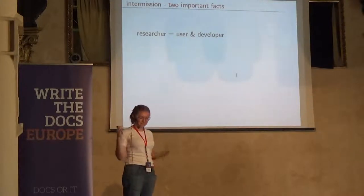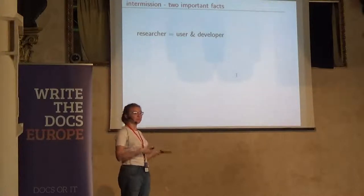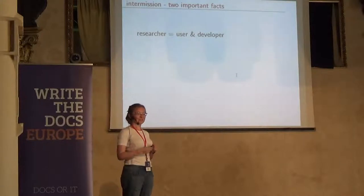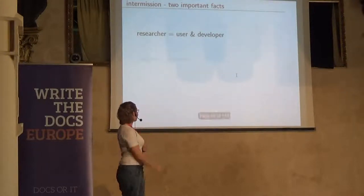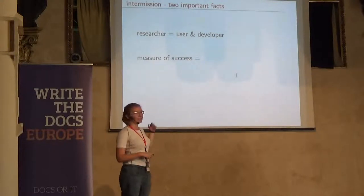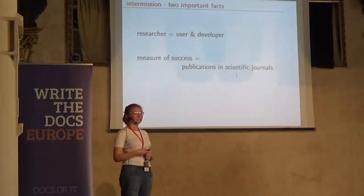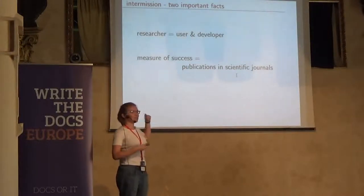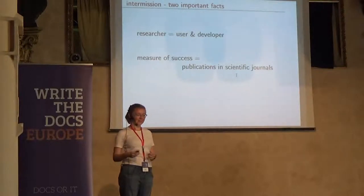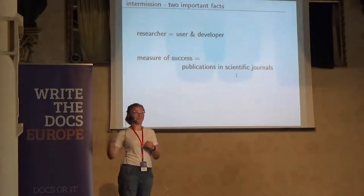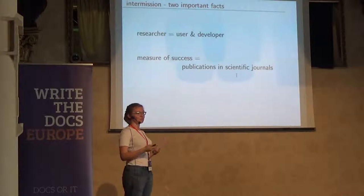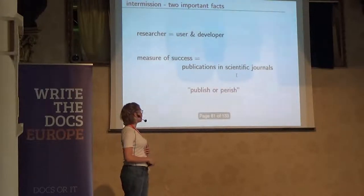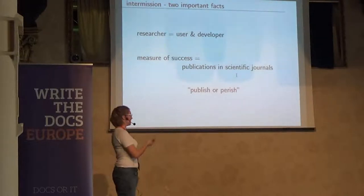If you're both a user and a developer, and very often working in a team of maybe four people, it's very easy to just cross out documentation from your to-do list — assuming you had documentation on your to-do list in the first place. The second reason is that when it comes to measuring how good a scientist I am, there is only one measure of success: the number of publications in a scientific journal. You submit a paper, it goes through a long review process by other scientists, and an editor decides whether it's worth publishing. There is a saying among scientists: you either publish or perish.